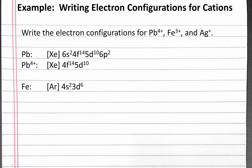To adjust it for iron-3+, we need to remove 3 electrons from the highest principal quantum number. So we remove two electrons first from the 4s subshell, and we still need to remove one more electron, so we remove it from the 3d subshell. What we're left with for iron-3+ is argon 3d5.